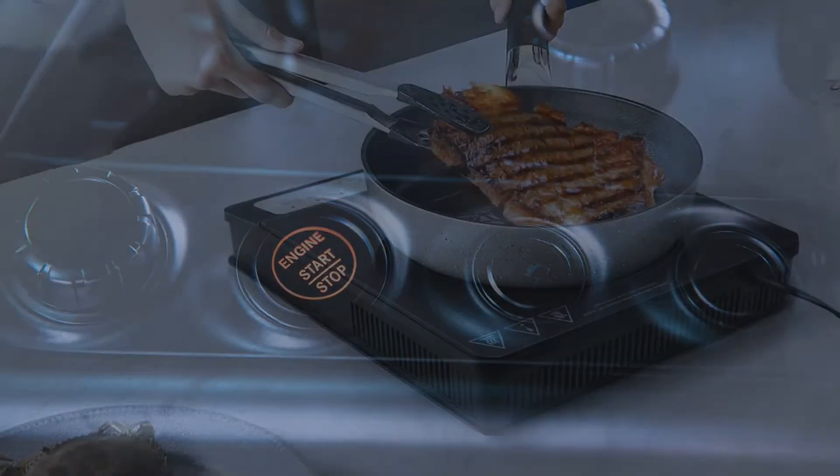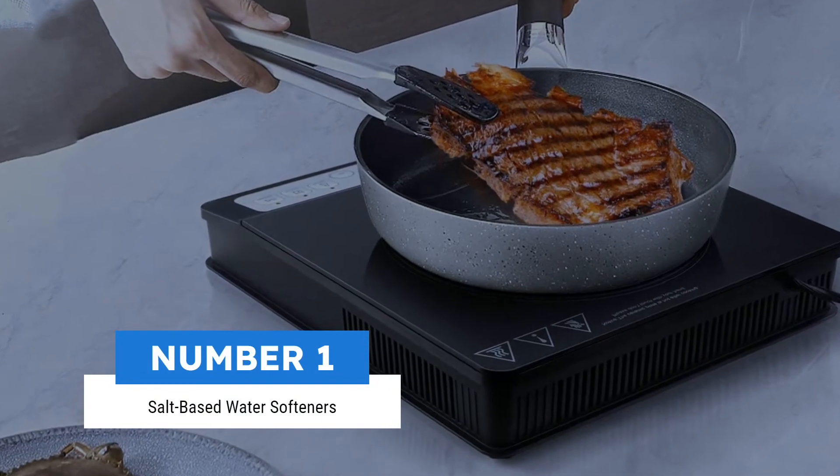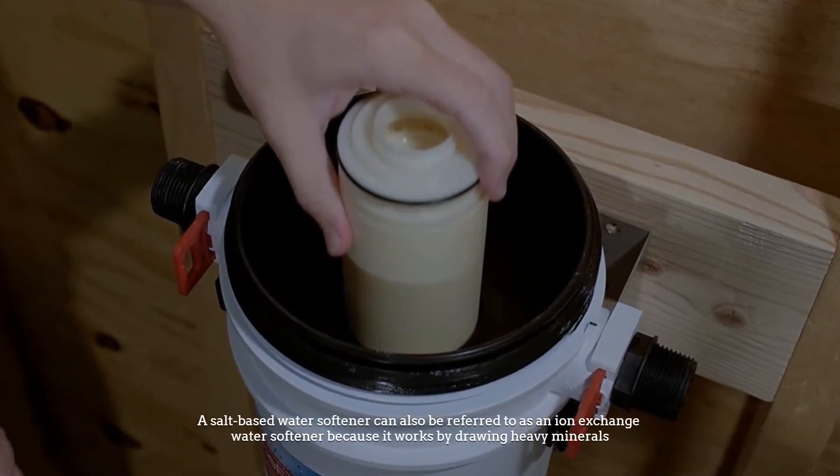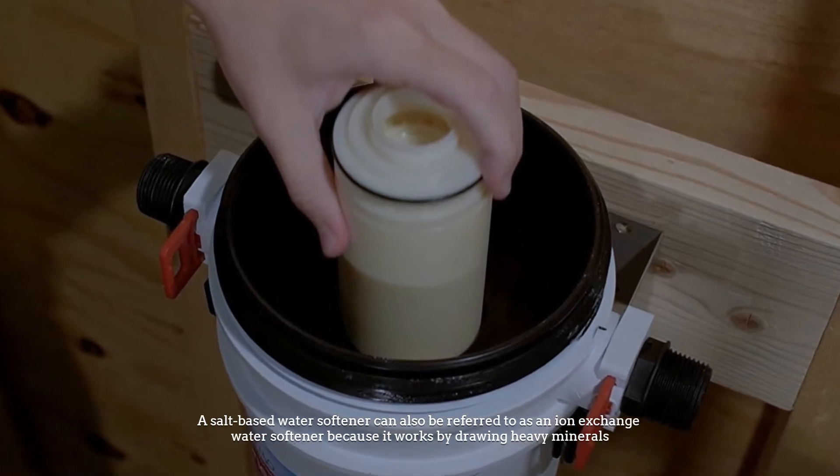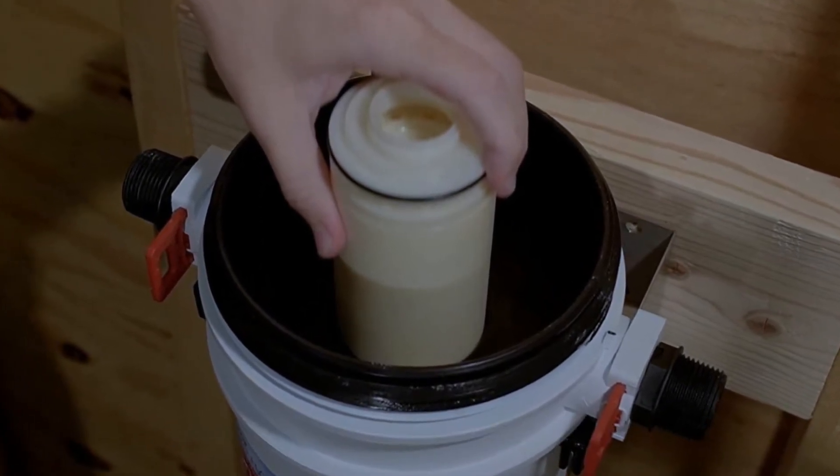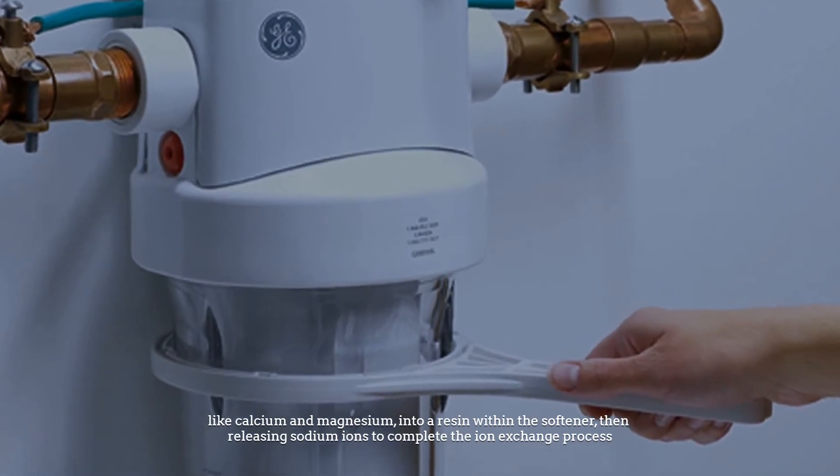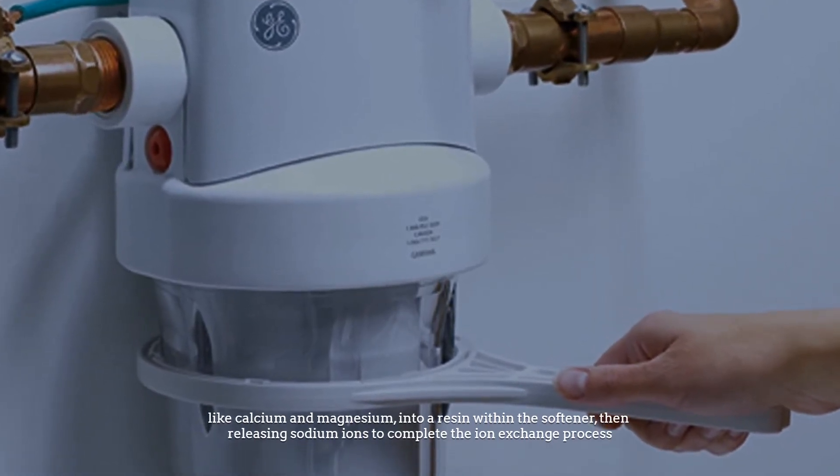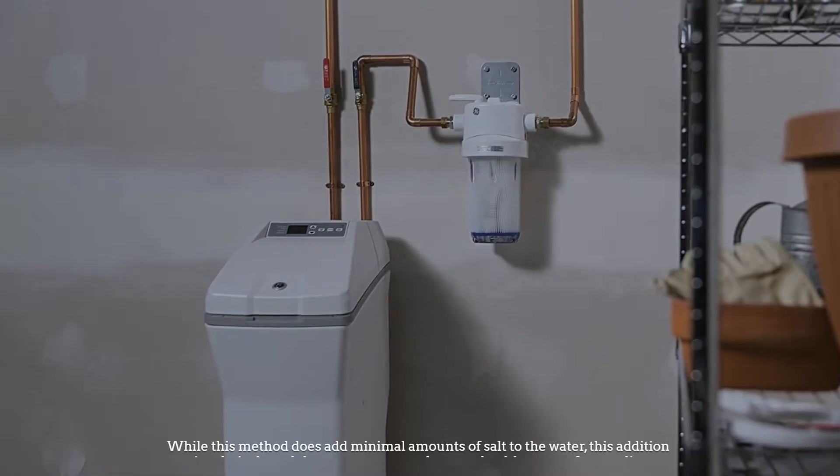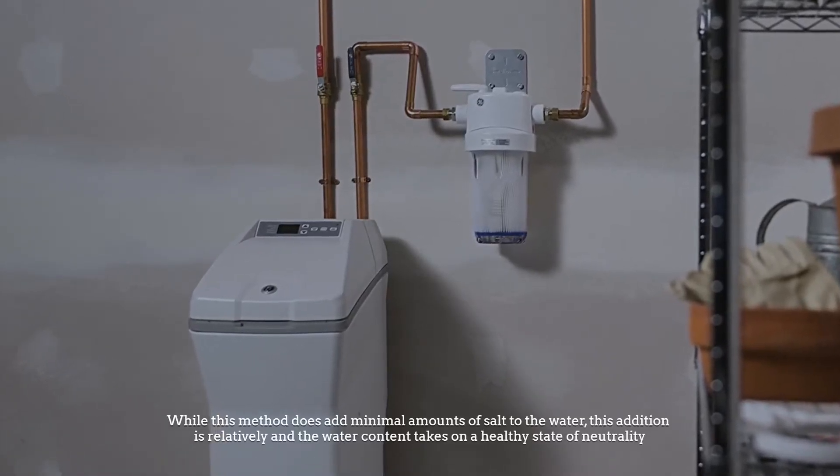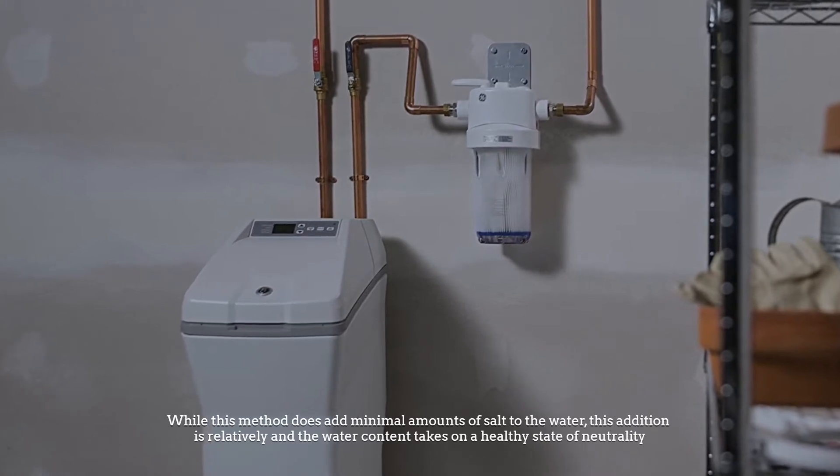Number one: salt-based water softeners. A salt-based water softener can also be referred to as an ion exchange water softener because it works by drawing heavy minerals like calcium and magnesium into a resin within the softener, then releasing sodium ions to complete the ion exchange process. While this method does add minimal amounts of salt to the water, this addition is relatively unnoticeable and the water content takes on a healthy state of neutrality.